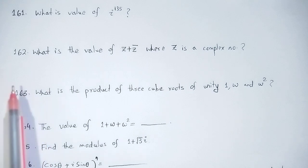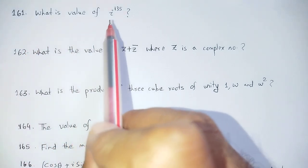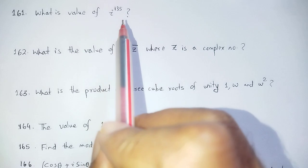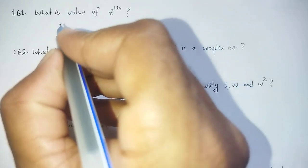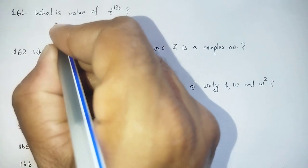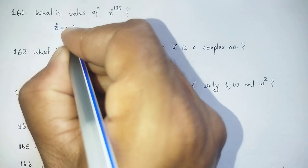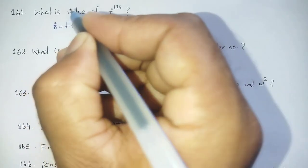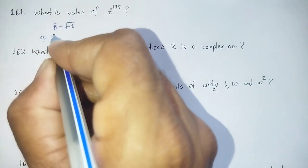Question number 161: What is the value of i to the power 135? Here i stands for the imaginary number. The imaginary number i represents the square root of minus 1. I calculate i² which equals minus 1.